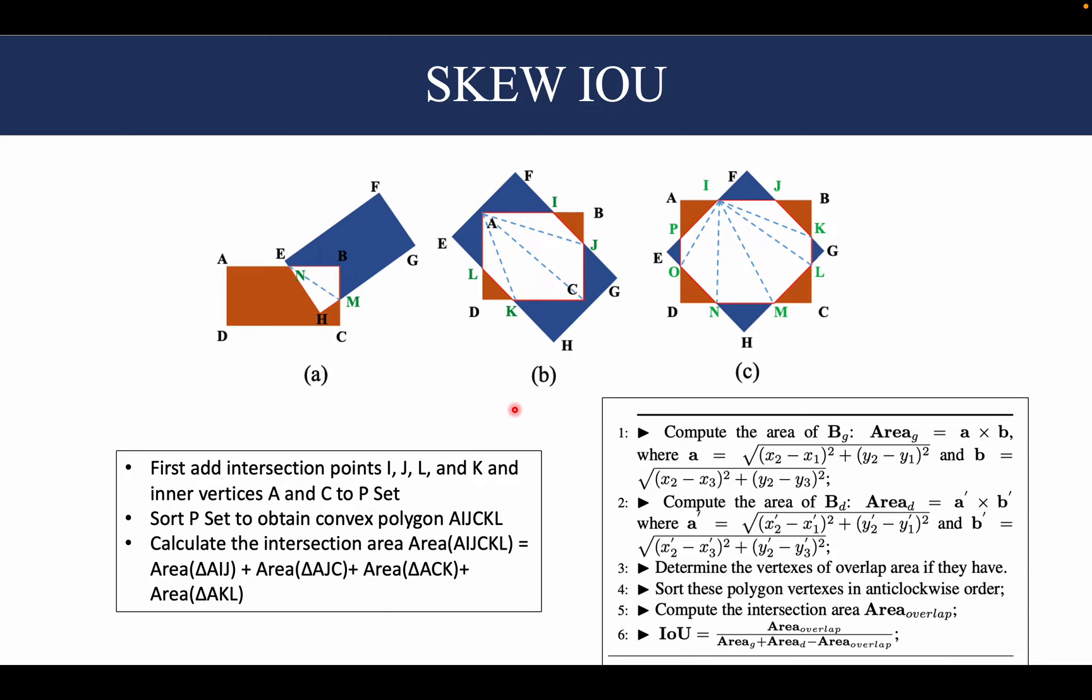To compute the SKEW IOU, the first step is to compute the area of the ground truth. Let's say the blue box is the ground truth, which is fairly easy. Then we compute the area of the prediction—let's say this red box is the prediction—that is also fairly easy. And then we have to determine the intersection area.